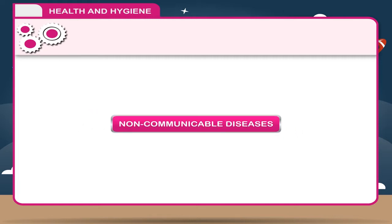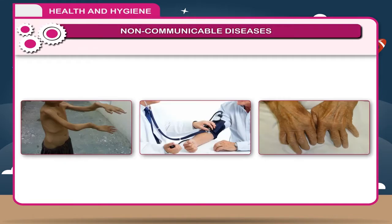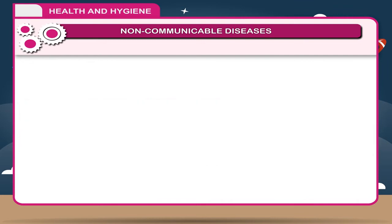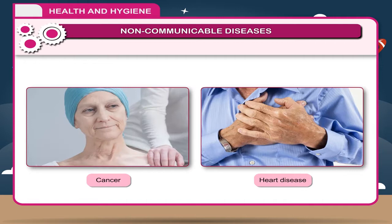Non-communicable diseases are not communicated from one person to another. They are either congenital or acquired diseases, or due to the malfunctioning of any organ of the body. Examples include rickets, hypertension, arthritis, cancer and heart disease.